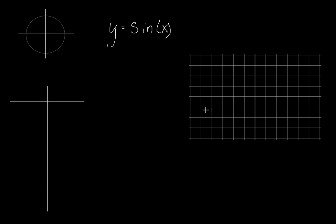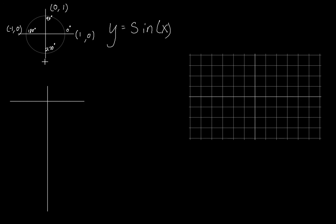First thing we're going to look at is the sine. I've put a couple of things up here — a very rough unit circle, a little chart, the function, and some coordinate axes so we can graph this once we figure it out. The unit circle has a radius of one. At zero degrees we go one to the right and zero up or down. At 90 degrees, zero left or right and one up. At 180 degrees, one to the left, zero up or down. At 270 degrees, zero left or right and one down. And I'll label this as 360 degrees as well.